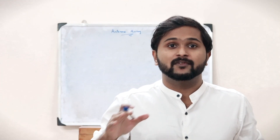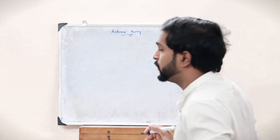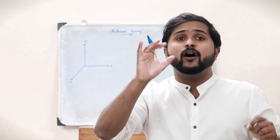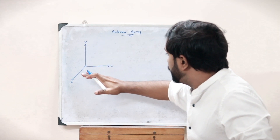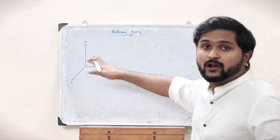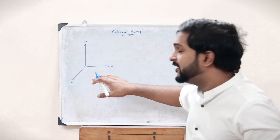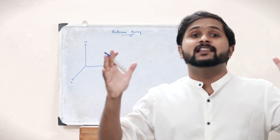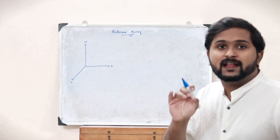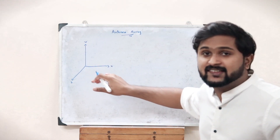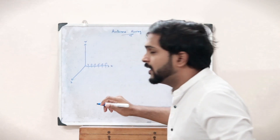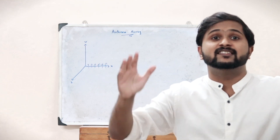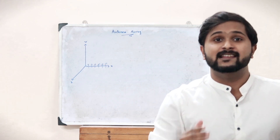Consider a coordinate system with the x-axis, y-axis, and z-axis. If each element of the antenna array is arranged along one of these axes — along the x-axis, y-axis, or z-axis — that kind of antenna array is called a single-dimensional antenna array or a linear antenna array. For example, if the elements are placed along the x-axis, it is a linear antenna array.